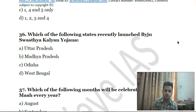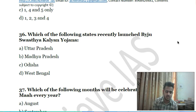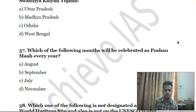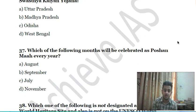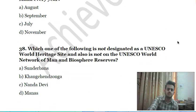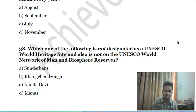Thirty-fifth question: which of the following states recently launched Biju Swasthya Kalyan Yojana? A) Uttar Pradesh, B) Madhya Pradesh, C) Odisha, D) West Bengal. Thirty-sixth question: which of the following months will be observed as Poshan Maah every year? A) August, B) September, C) July, D) November.